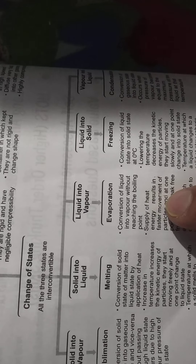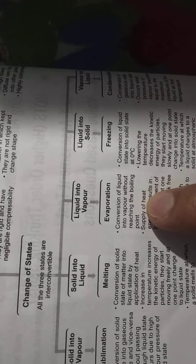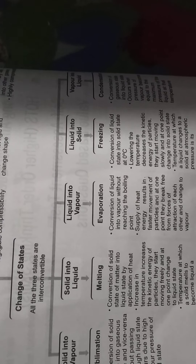What is evaporation? The conversion of liquid into vapour state without reaching the boiling point is called evaporation. Supply of heat energy results in faster movement of the particles, and at one point they break free from the force of attraction of each other and change into vapour.